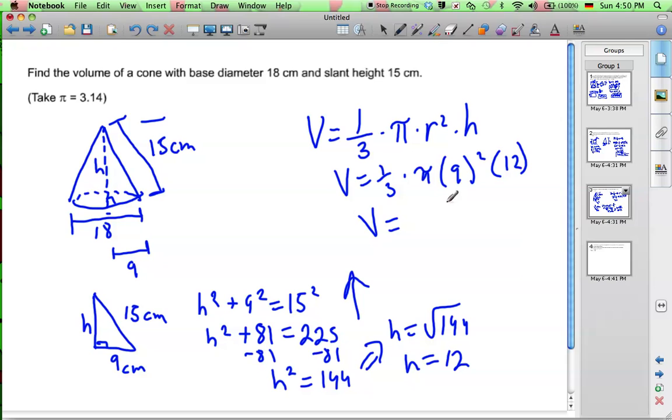Using our calculator—actually, let's do it in terms of pi first. So we have 1 third times pi times 81. And actually, 1 third times 12, that gives you 4. So let's just cross out that and write down 4. So volume equals 324 pi.